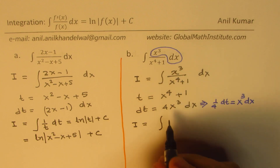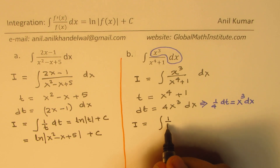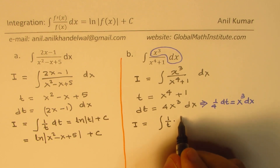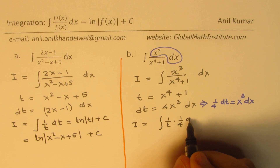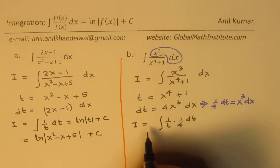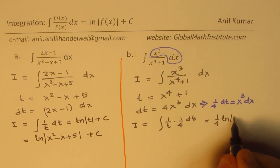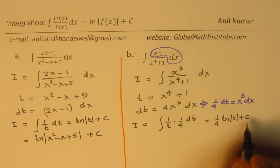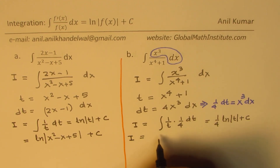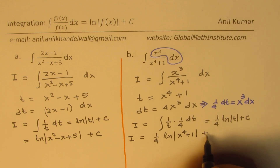We write 1/(x⁴ + 1) as 1/t and x³ dx as (1/4) dt. So the integral becomes (1/4) ∫(1/t) dt, which equals (1/4) ln|t| + c. Substituting back, the integral equals (1/4) ln|x⁴ + 1| + c.